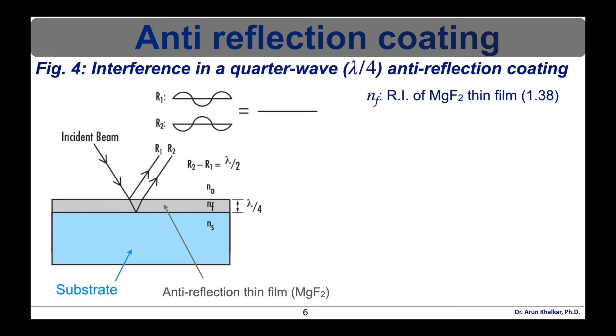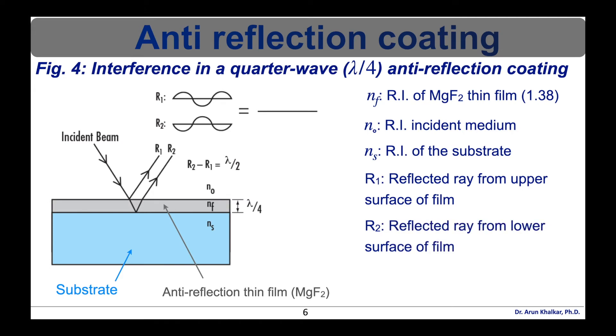So in this diagram, NF is the refractive index of magnesium difluoride thin film which is 1.38. N0 is refractive index of incident medium. Ns is the refractive index of substrate. R1 is reflected ray from the upper surface of the film. R2 is the reflected ray from lower surface of the film. And lambda by 2 is the path difference between the reflected beams.